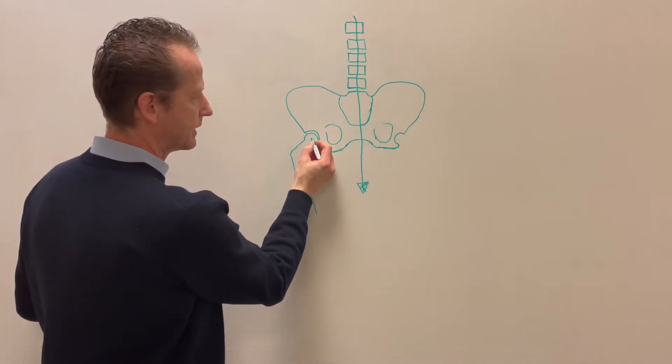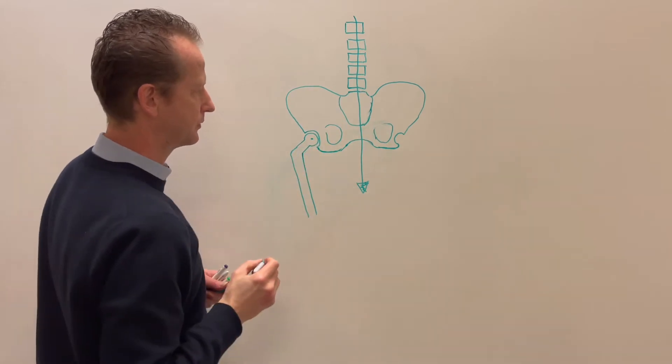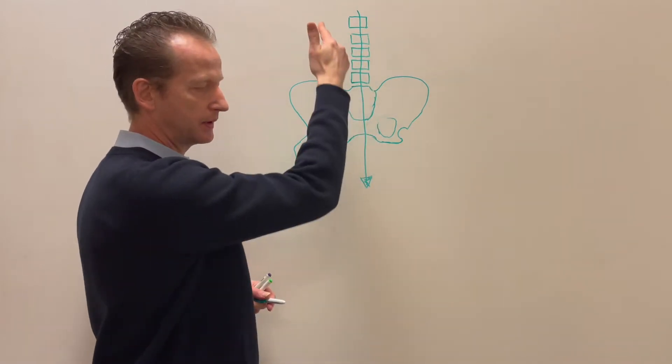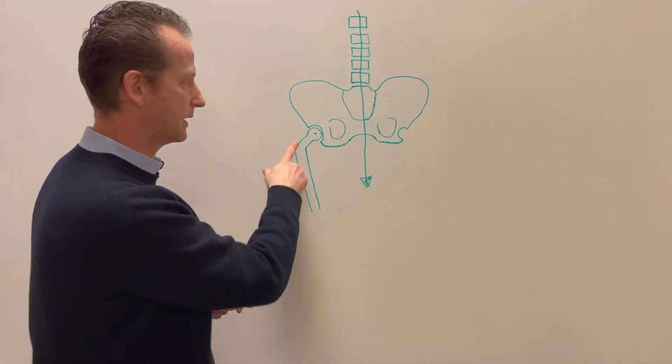Here we have the center of the hip joint, center of the femoral head. This is pulling us, gravity is pulling us down. We're standing on one leg.